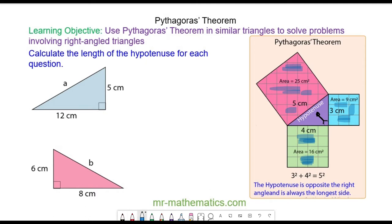We can use this theorem to calculate the length of a in this right-angled triangle. The side a is opposite the right angle, so that is the hypotenuse. The area of the square on the hypotenuse side, a squared, is equal to the sum of the areas on the other two sides. The area of the square on the 5 centimetre side is 5 squared, and the area of the square on the 12 centimetre side is 12 squared.